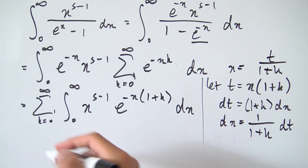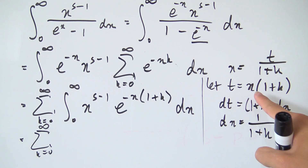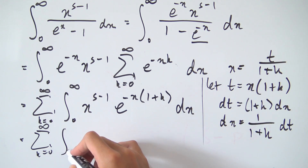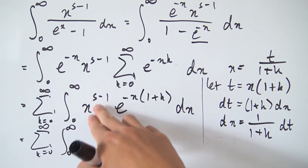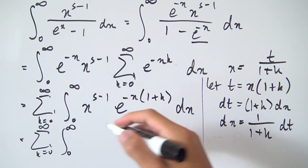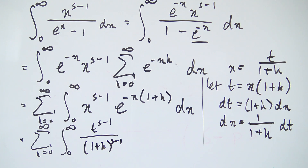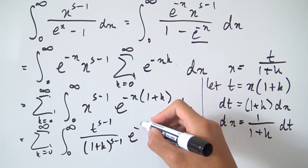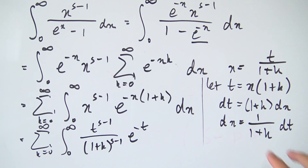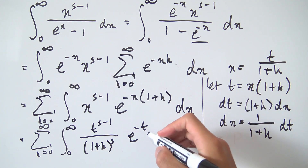Substituting back into our integral, the sum still runs from k equals 0 to infinity. The bounds are preserved since t goes from 0 to infinity as x does. Substituting x equals t over 1 plus k, we get t to the s minus 1 over 1 plus k to the s minus 1. The exponential becomes e to the negative t, and multiplying in the dx factor of 1 over 1 plus k adds 1 to the exponent, giving 1 plus k to the s in the denominator.